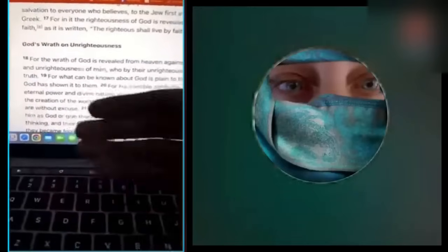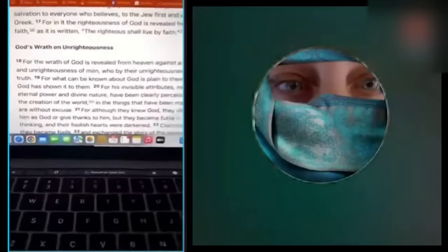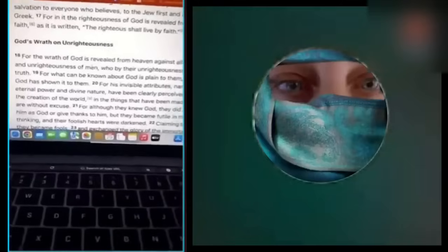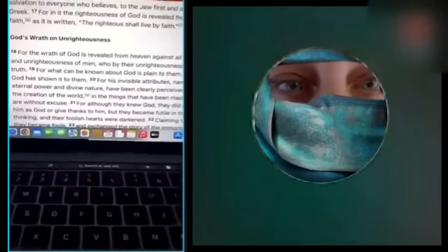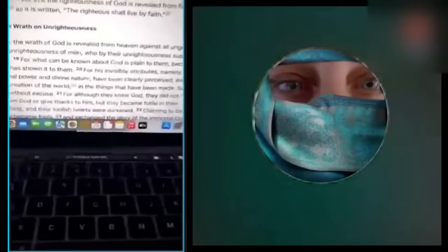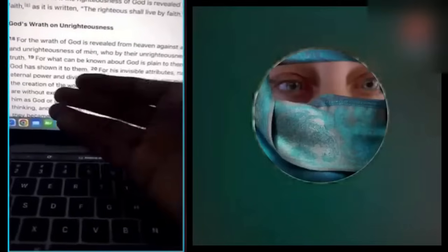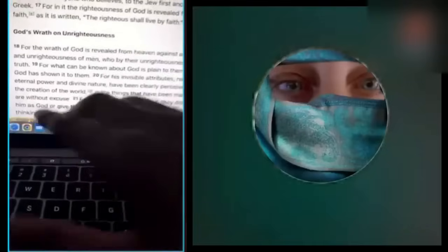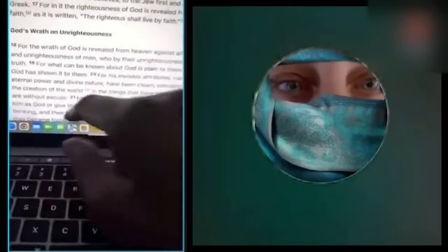Now he continues for the wrath of God is revealed from heaven against all ungodliness and unrighteousness of men who by their unrighteousness suppress the truth. The Bible says men know the truth, but they suppress the truth. They hold it under, they hold it down as if you're trying to hold a ball under the water. Like you ever go to a swimming pool, you try to hold the ball underwater and it keeps coming up, but you got to suppress it. This is what the Bible says that men do. They suppress the truth in their unrighteousness. They know the truth.